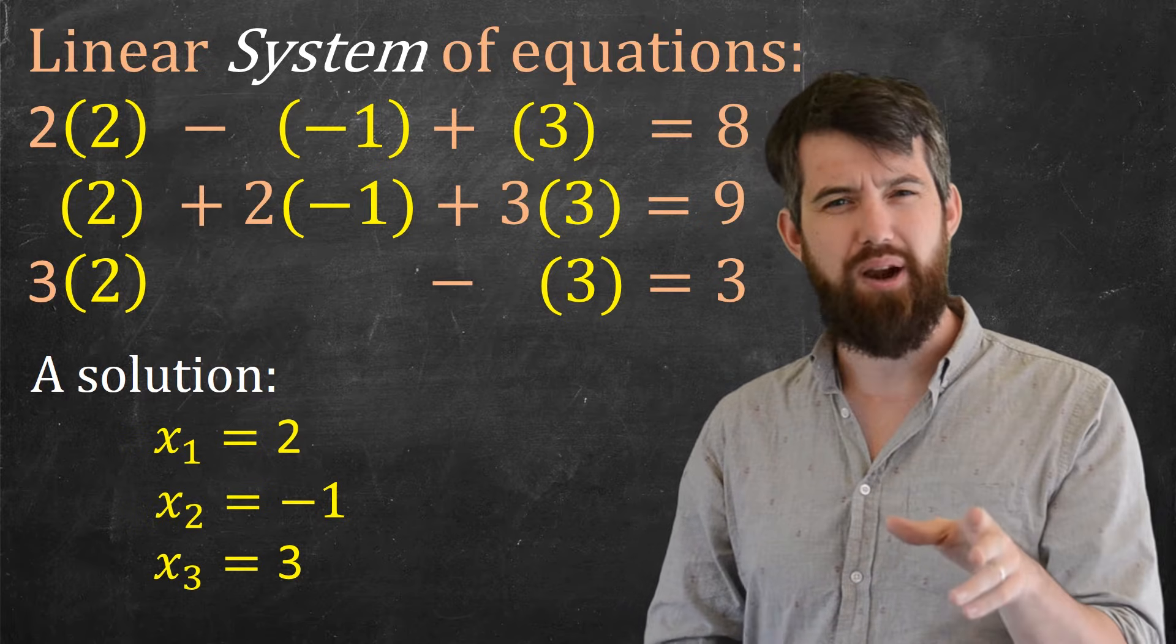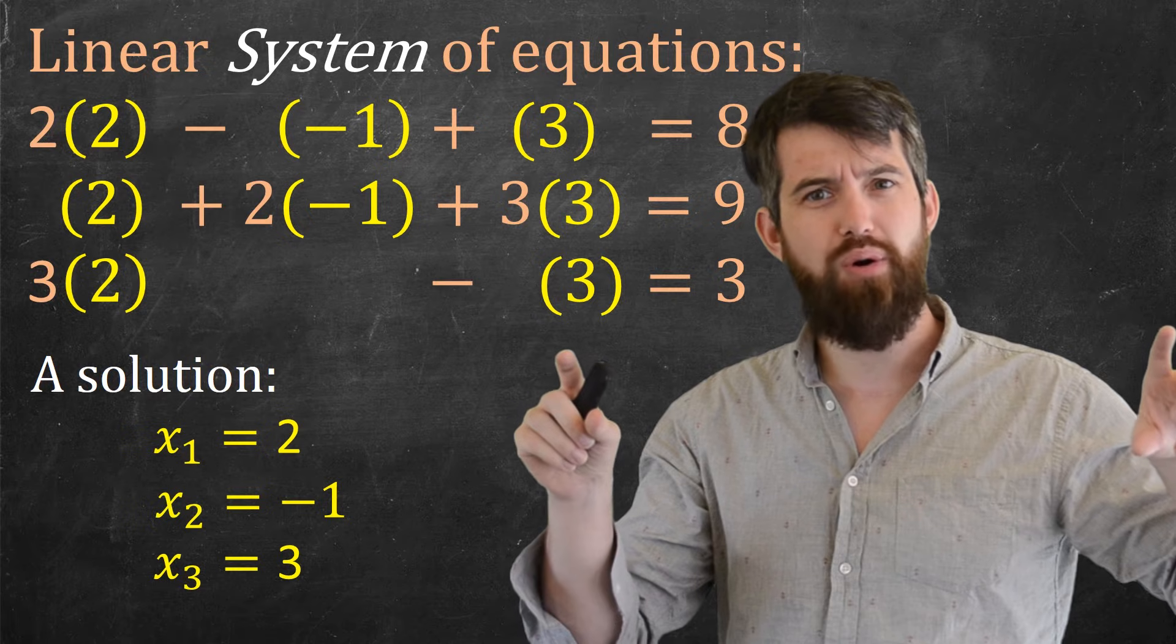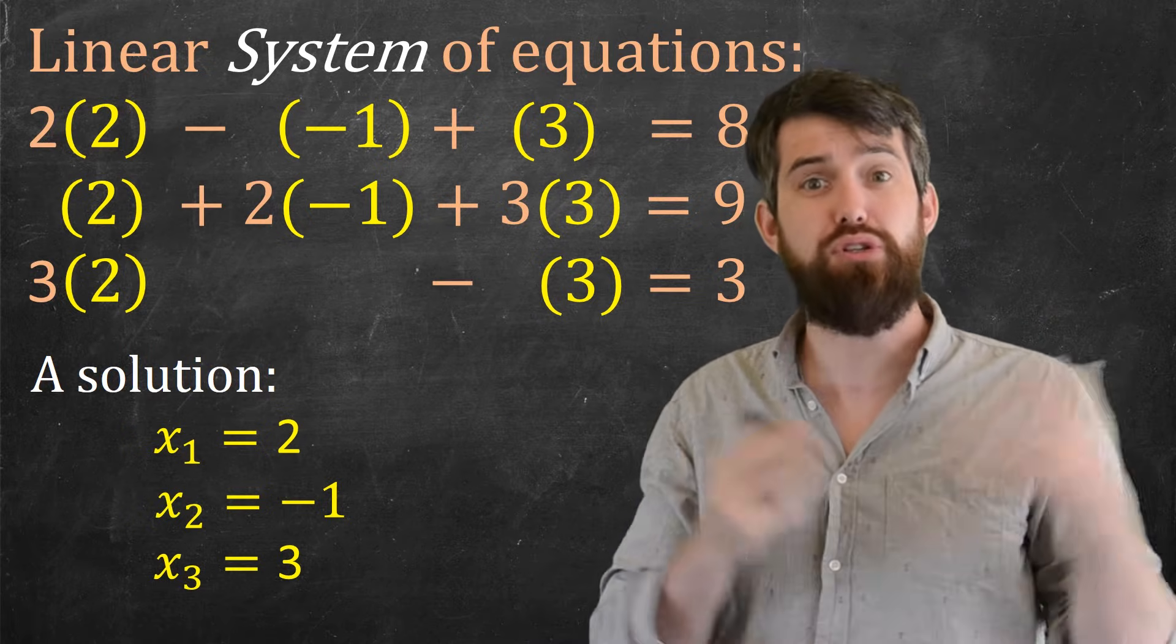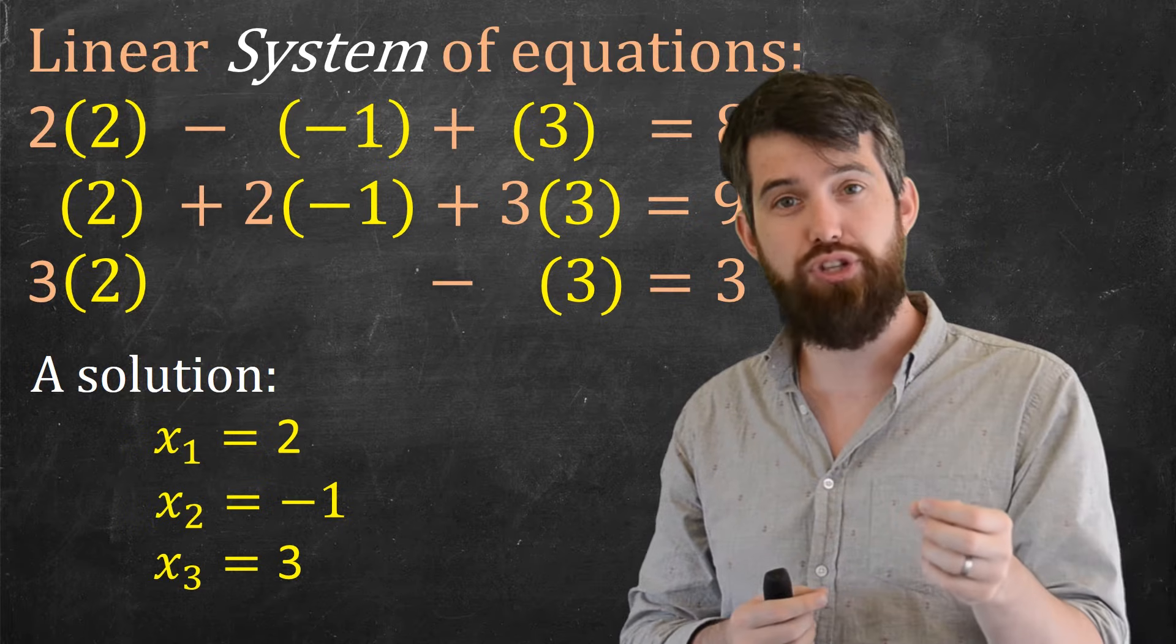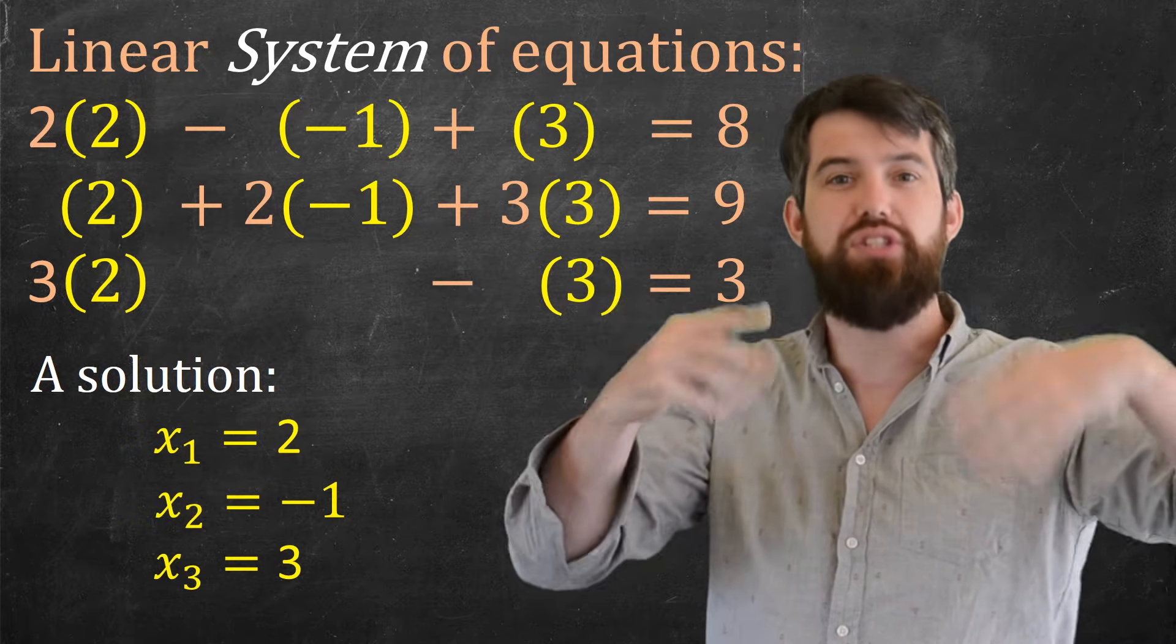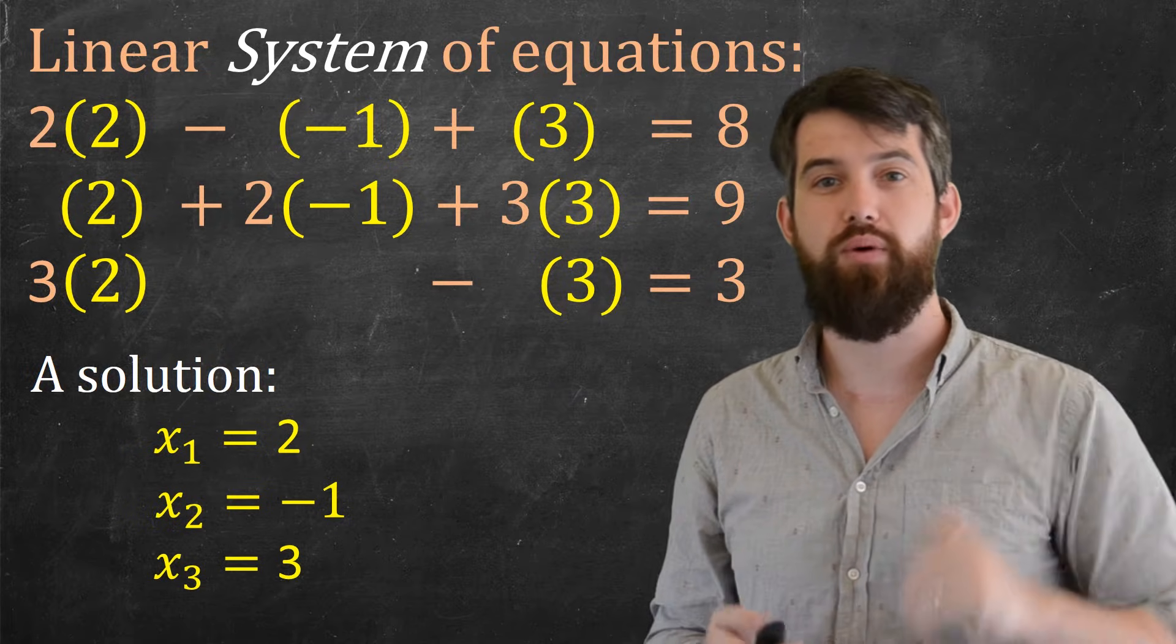But I do want to note something here. Remember the solution 4, 0, 0 just to the top row? That still is a solution to the top row. 4, 0, 0 is a solution to the top row, but it is not a solution to the bottom row any longer. It is not the case that every solution to an individual equation solves the entire system. It has to solve all three equations.